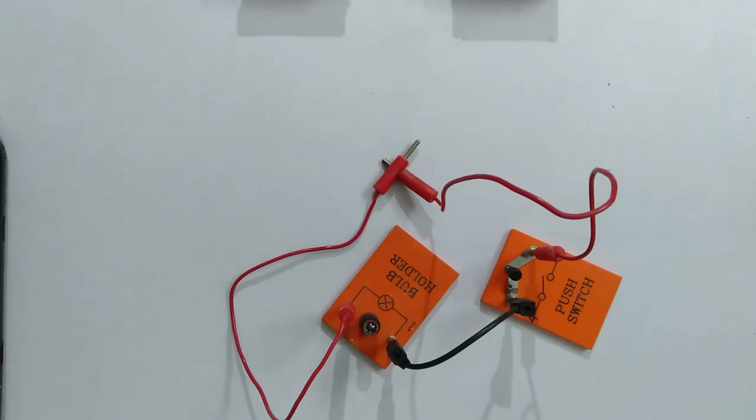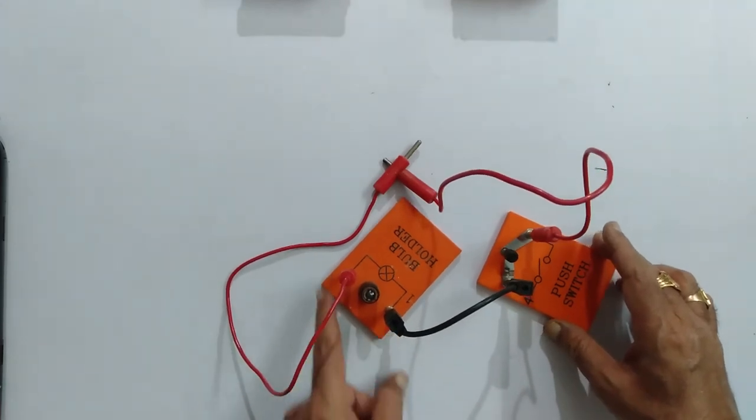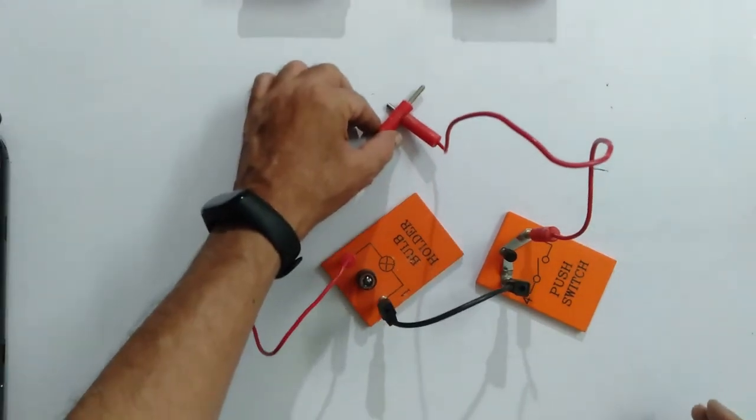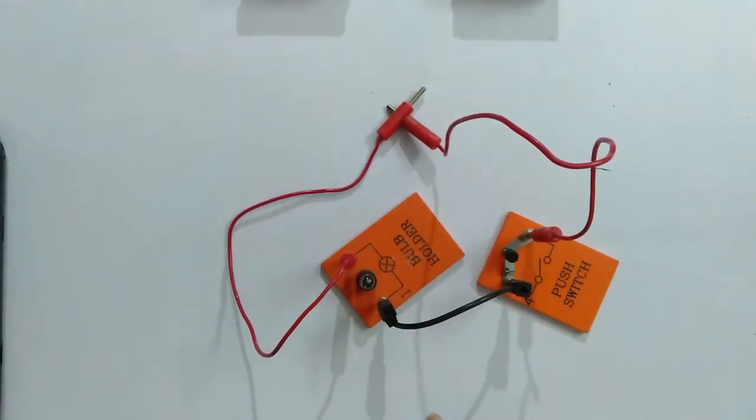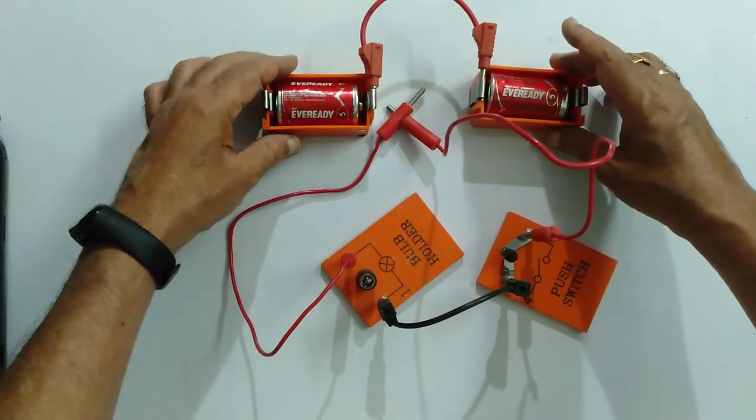So what does it confirm? It confirms that to light the bulb or to allow the flow of charge through the wires, a power source is required. That power source is nothing but these cells.